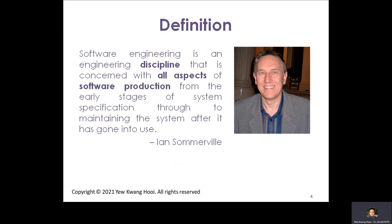According to Ian Somerville, an author of a software engineering book used in many colleges and tertiary institutions, software engineering is an engineering discipline concerned with all aspects of software production — from the early stages of system specification through to maintaining the system after it has gone into use. The key point is that software engineering is an engineering discipline involving process, standard process, and best practices — less individualism, more process.